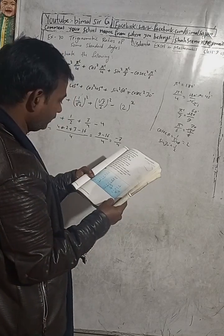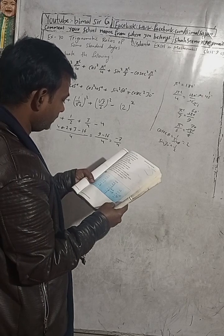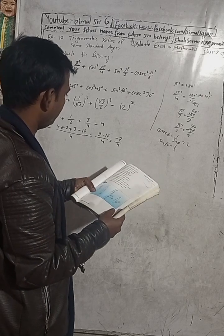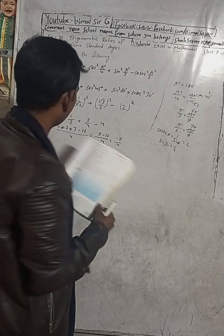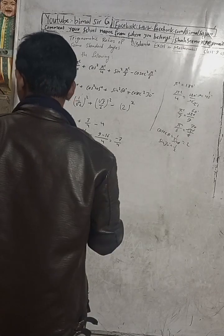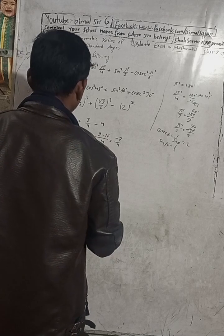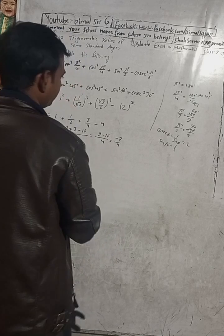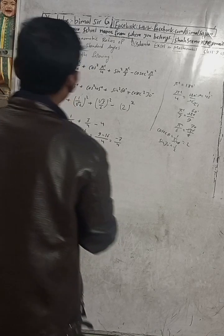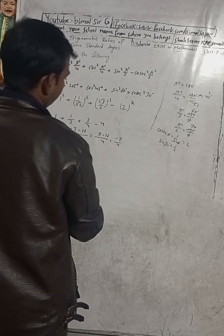So the answer for question 3(a) is −7/4. Correct answer. Now part (b).